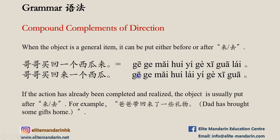For example: 哥哥买回一个西瓜来, or equally: 哥哥买回来一个西瓜。 Another example: 爸爸带回来了一些礼物。 礼物 means 'gift.' The sentence means: 'Dad has brought some gifts home.'